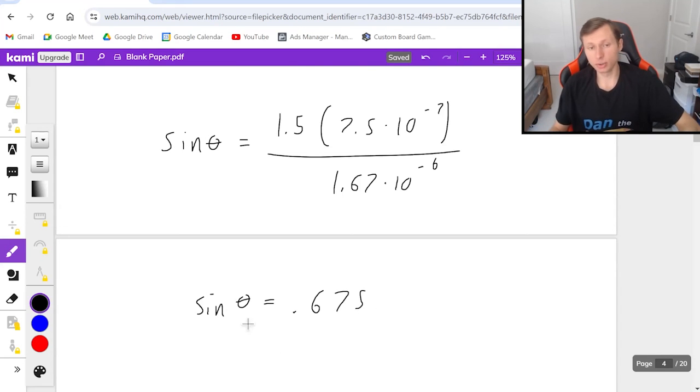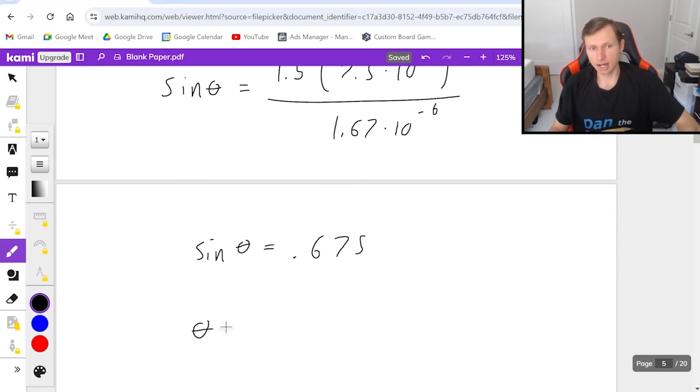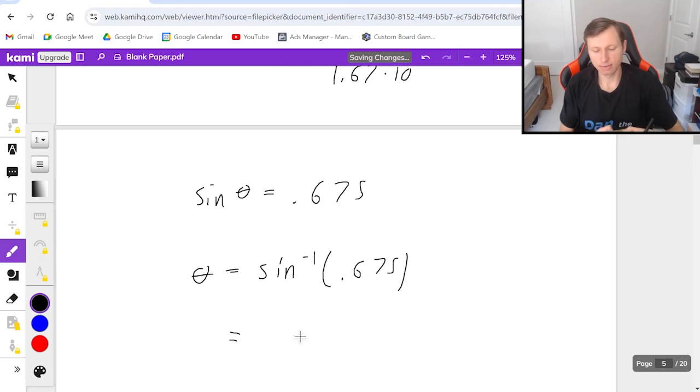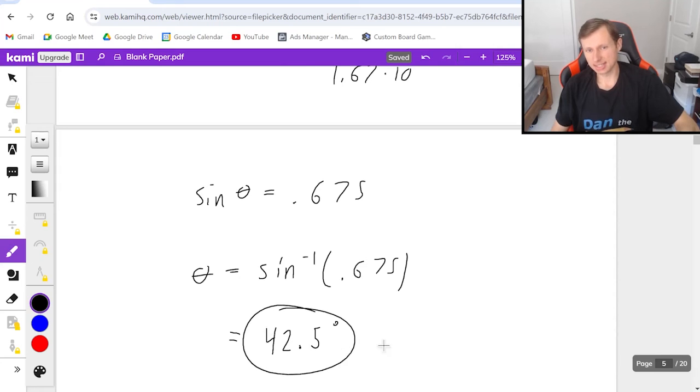And then the last thing I need to do is, if I want to solve for theta, then I need to take the inverse sine of both sides, thus giving me an answer of 42.5 degrees. And that's the answer.